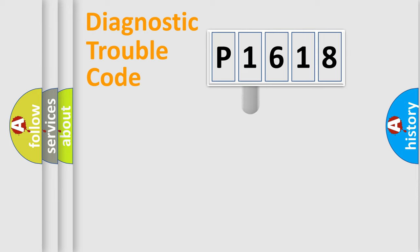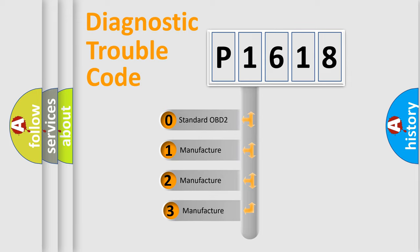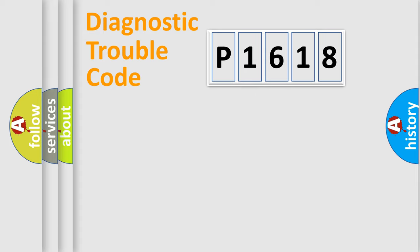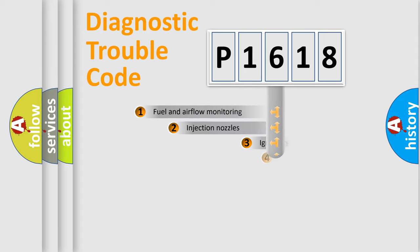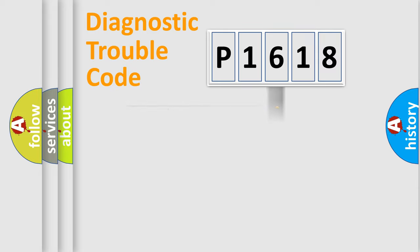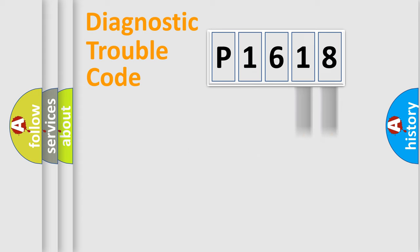This distribution is defined in the first character of the code. If the second character is expressed as zero, it is a standardized error. In the case of numbers 1, 2, or 3, it is a more specific expression of a car-specific error. The third character specifies a subset of errors. This distribution is valid only for the standardized DTC code. Only the last two characters define the specific fault of the group.